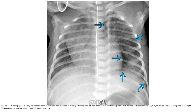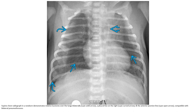Supine chest radiograph in a two-day-old neonate born at 34 weeks gestation showing lucency. The left hemithorax has a well-defined lucency at the costophrenic angle, as compared to the right. This appearance was due to a moderate left hemothorax. Another case demonstrates relative lucency over the lung bilaterally, a pleural line on the right, and the anterior junction line, compatible with bilateral pneumothorax.